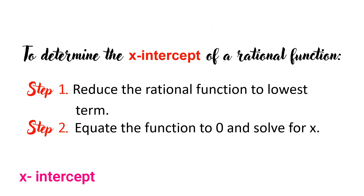To determine the x-intercept of a rational function, follow two steps. First, reduce the rational function to lowest term. Second, equate the function to 0 and solve for x. We equate to 0 because f(x) is the same as y, and the y-coordinate of an x-intercept is always 0, since the x-intercept lies on the x-axis.